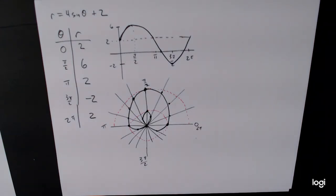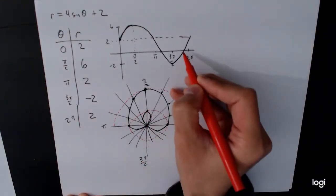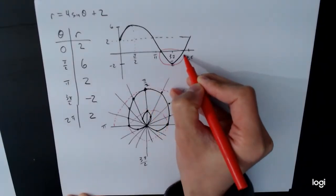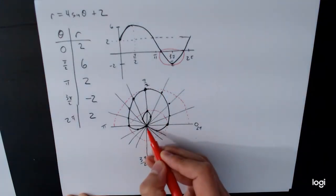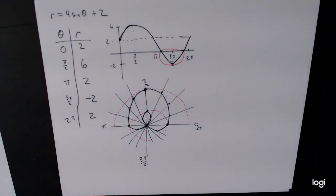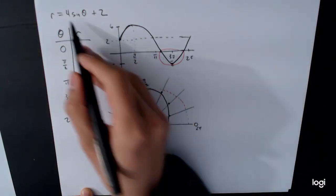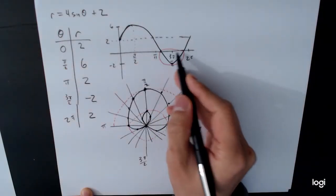When the problem asks us to determine the interval of theta that corresponds to the inner loop, we had no idea what that was until after we graphed it. Now we can see the inner loop is this part here. That inner loop corresponds to the negative piece, because that's where it crosses over 0, which means it goes inside itself and comes out again. So we need to figure out where that inner loop happens — it happens where our value is equal to 0.